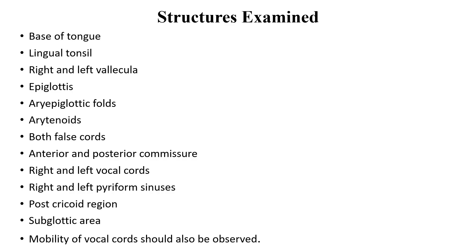The structures which we can examine with indirect laryngoscopy include: base of the tongue, lingual tonsil, right and left vallecula, epiglottis, aryepiglottic fold, arytenoids, false chords, true vocal cords, anterior and posterior commissure, right and left piriform sinus, post-cricoid region, and subglottic area. Mobility of the vocal cords should be observed — we ask the patient to say 'E' and when they pronounce it, the vocal cords move and mobility can be assessed. We can get a glimpse of the subglottic area but detailed visualization of the subglottis is difficult.